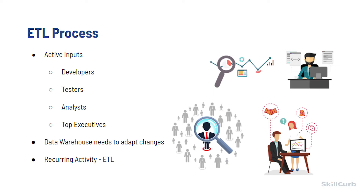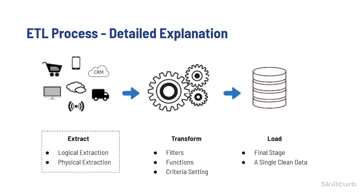To maintain its value as a tool for decision makers, the data warehouse system needs to change with business changes. ETL is a recurring activity — daily, weekly, monthly — of a data warehouse system, and needs to be agile, automated, and well documented. If you have many data sources such as files, databases, spreadsheets, etc. that you want to transform into a different format, an ETL tool will automatically aggregate all this data for you.